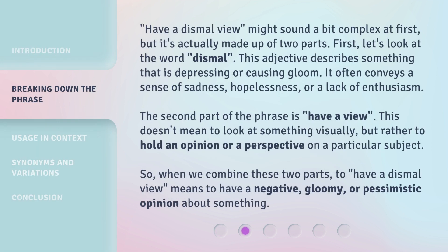Have a dismal view might sound a bit complex at first, but it's actually made up of two parts. First, let's look at the word dismal. This adjective describes something that is depressing or causing gloom. It often conveys a sense of sadness, hopelessness, or a lack of enthusiasm. The second part of the phrase is have a view. This doesn't mean to look at something visually, but rather to hold an opinion or a perspective on a particular subject.